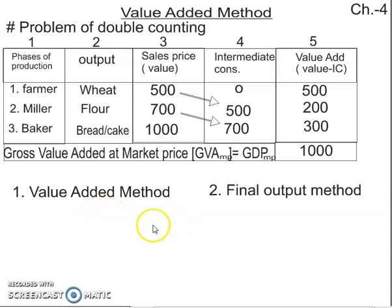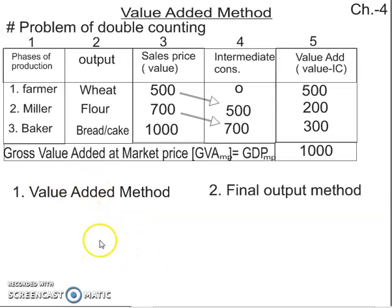Now let's review GDP. GDP refers to the value of final goods and services produced in an accounting year within the domestic territory of a country.